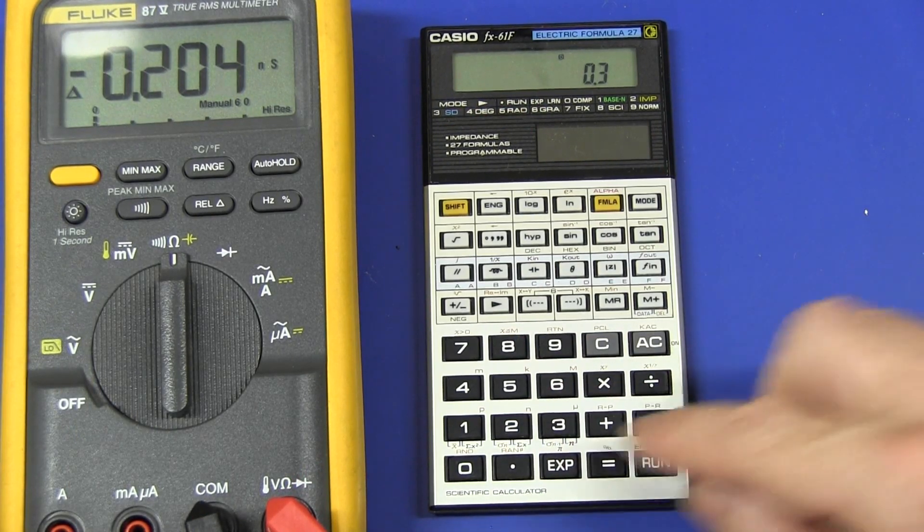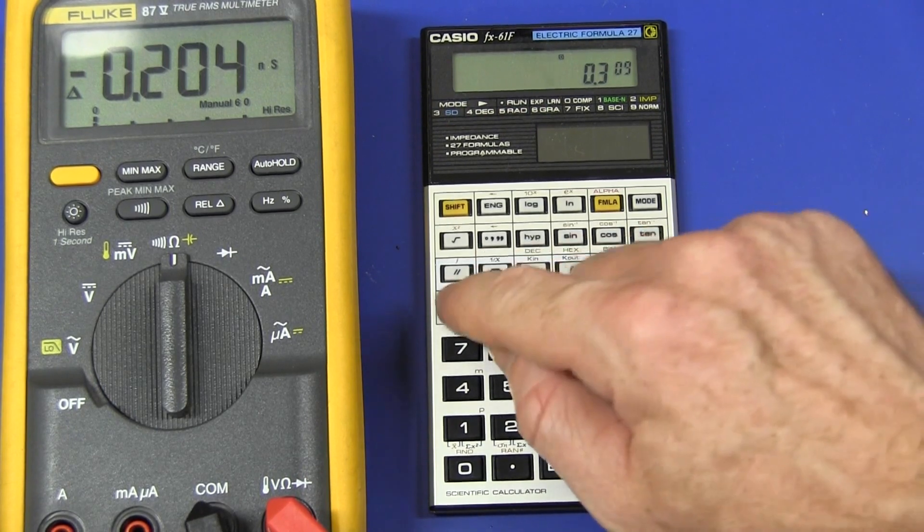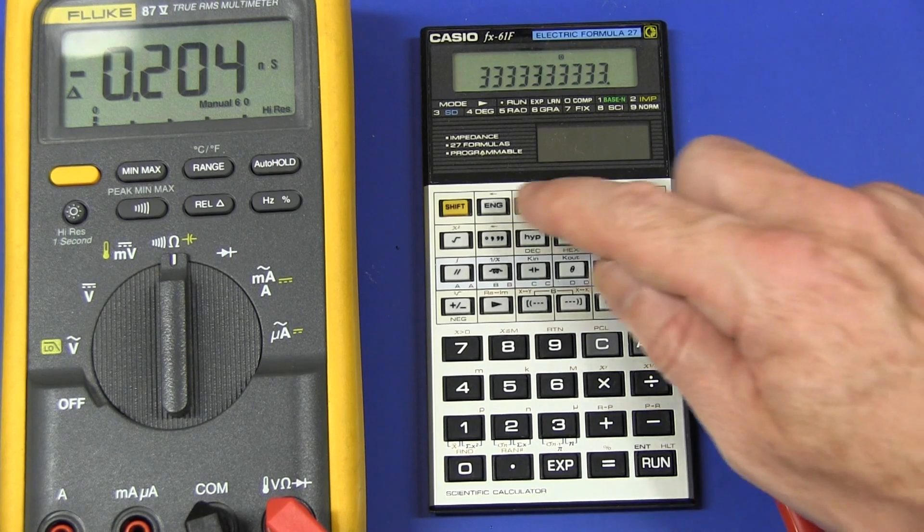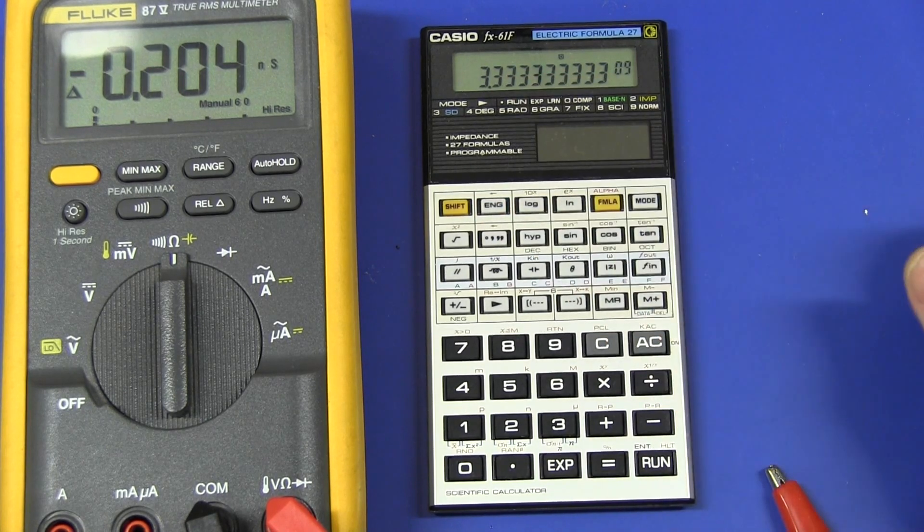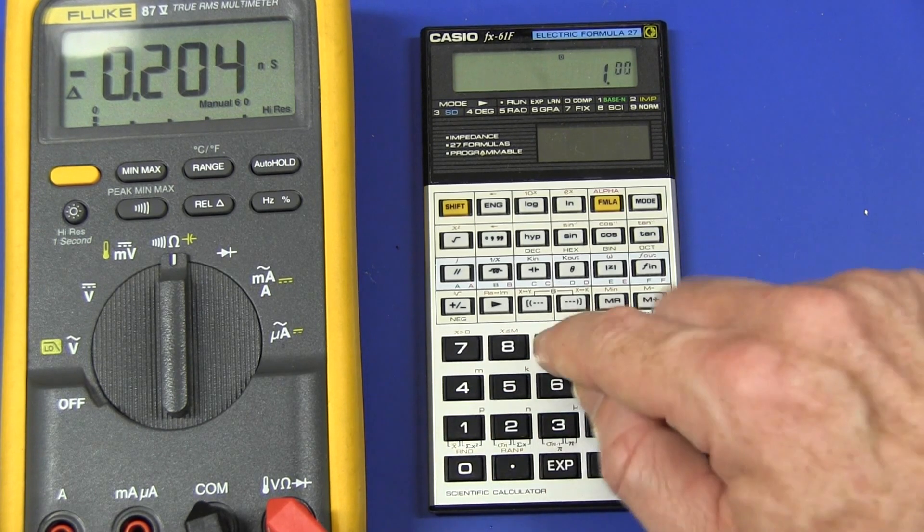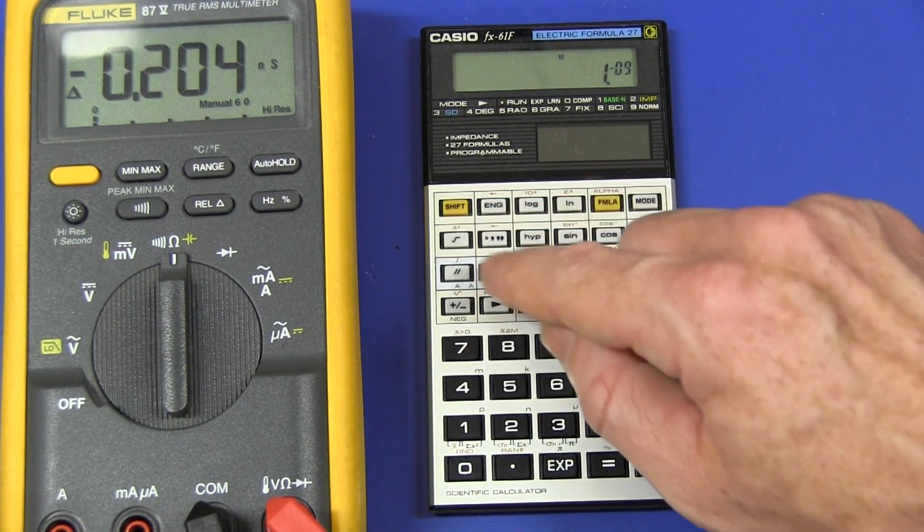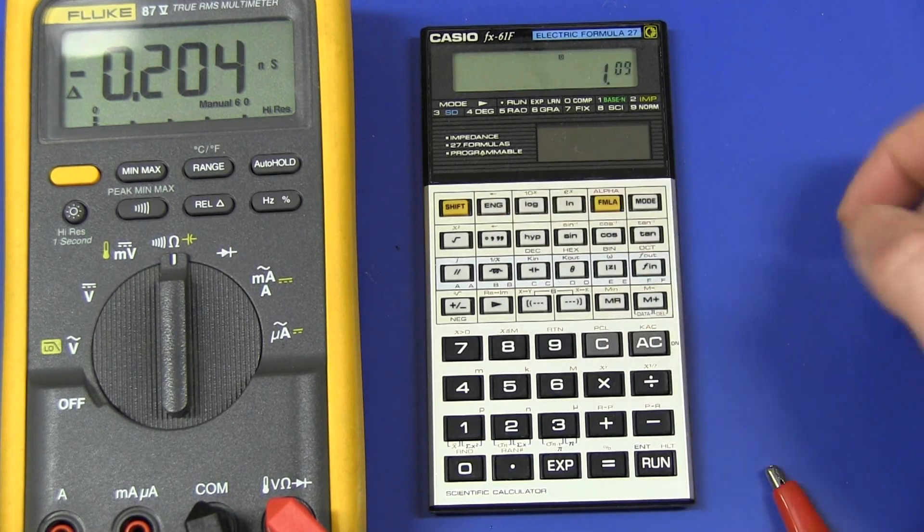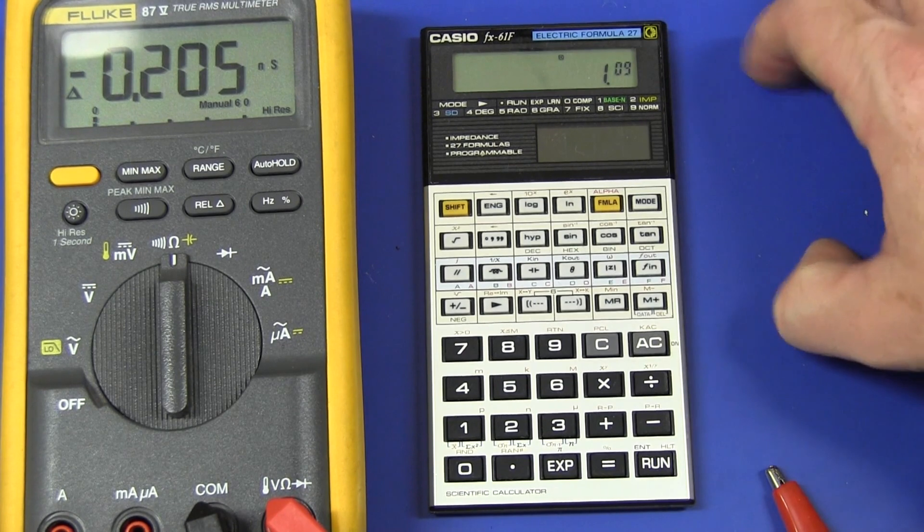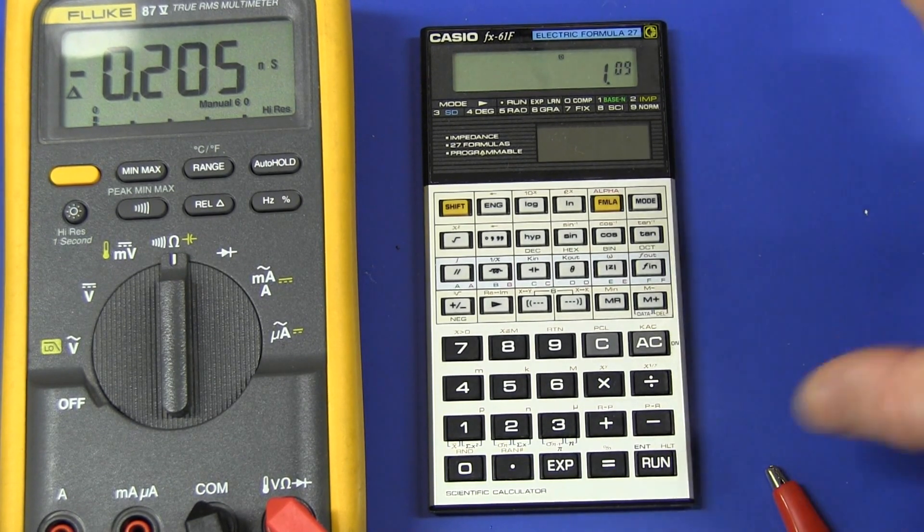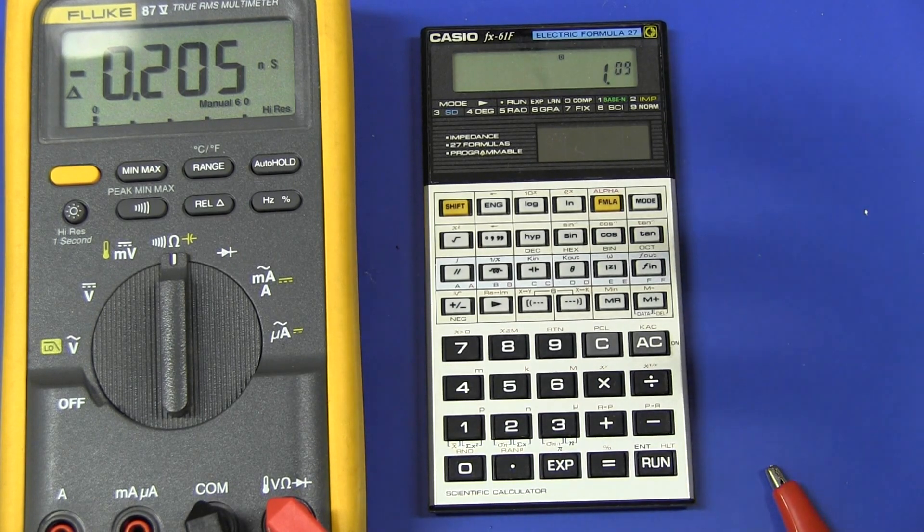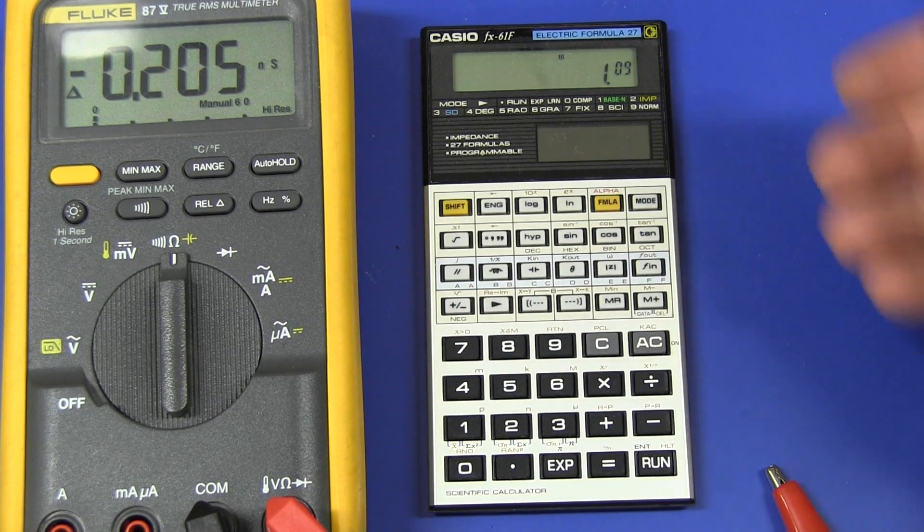So what's 0.3 nanosiemens? Well, all you do is invert it on your calculator. So 0.3 nanosiemens, like that, and we invert it, bang, we're talking 3.3 gigaohms. And if you want 1 nanosiemens, like that, you invert that on the calculator, you're still talking 1 gigaohm resistance. These things are incredibly high. It'll be dependent upon voltage and all sorts of stuff like that. But you're talking many, many gigaohms resistance for these mats.